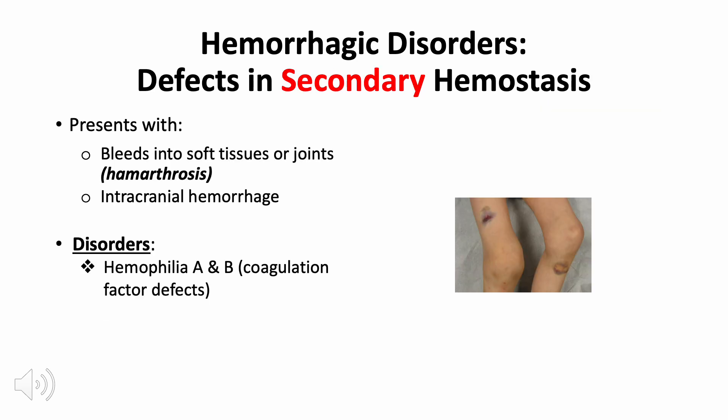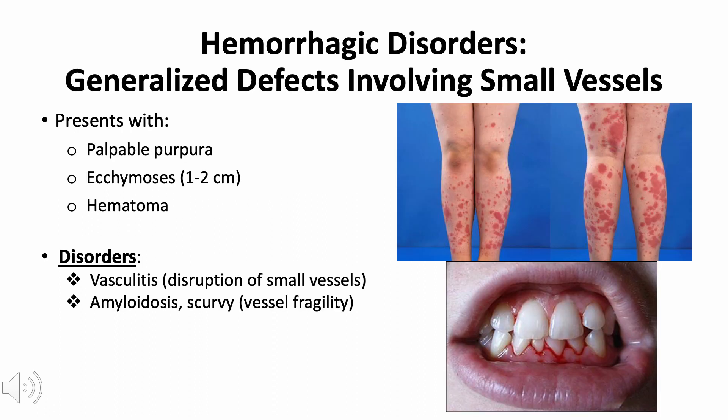For secondary hemostasis defects or coagulation factor defects, diseases under this category often present with bleeds in soft tissues or joints. Bleeding into joints, clinically referred to as hemarthrosis following minor trauma, is particularly characteristic of hemophilia. In contrast to chronic external blood loss as in gastrointestinal or menstrual bleeding, since red blood cells are retained in the tissues or body cavities, the iron content tends to be recovered and recycled for use in hemoglobin synthesis. Therefore, these patients may not exhibit iron deficiency anemia despite chronic bleeding.